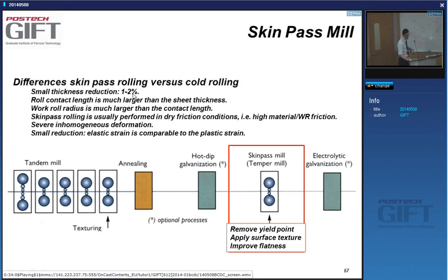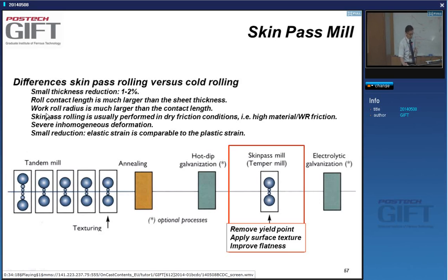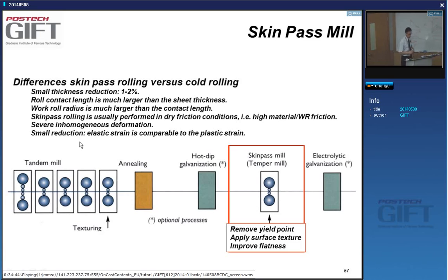The skin pass is a very small reduction — about 1% to 2% at most. It's a special mill with a very long contact length between the roll and the sheet, using a very large work roll, and it's usually done in dry rolling conditions. The deformation is not homogeneous because of the very low amounts of deformation applied. The amount of plastic deformation given is almost the same as the amount of elastic deformation — it's a very small amount of deformation.